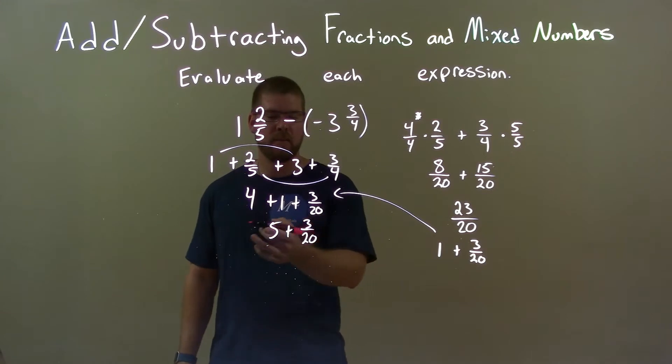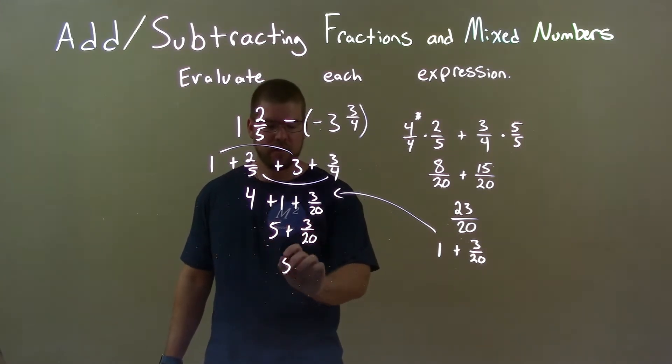Now, we can combine these two together to get our final answer. Just one mixed fraction. 5 and 3 over 20.